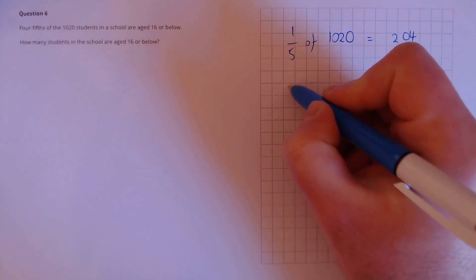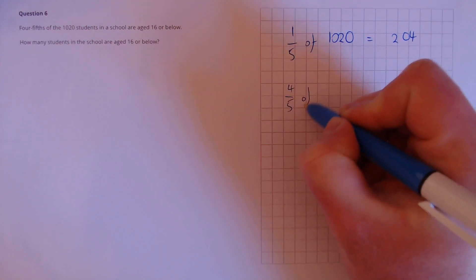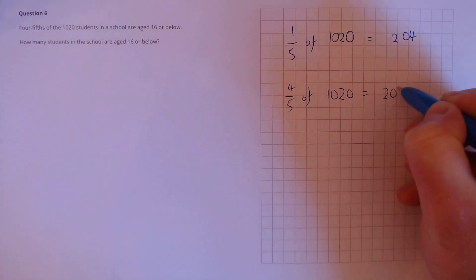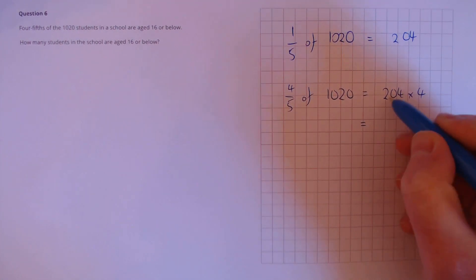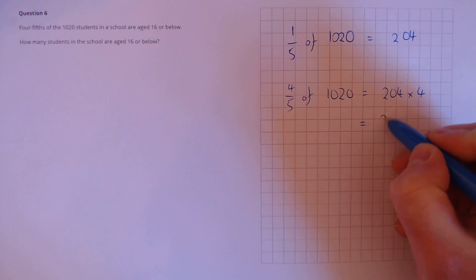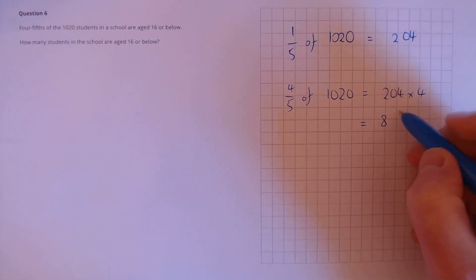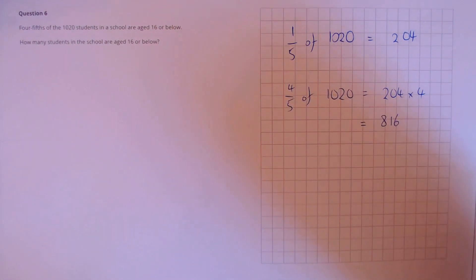Now that we've got one fifth, four fifths is simply one fifth multiplied by 4, which equals 200 times 4, that's 800, and 4 times 4, that's 816 students.